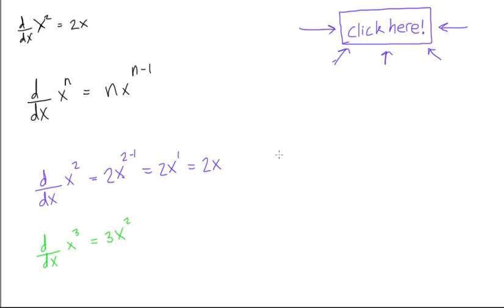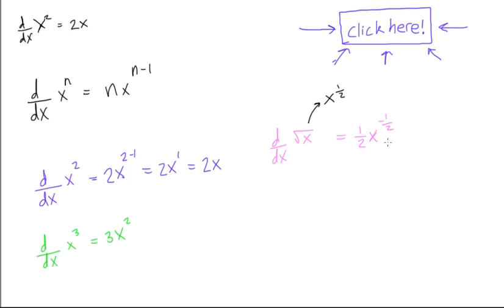Let's do some more. Say we want d/dx of the square root of x. Well, the square root of x is the same thing as x to the power of 1/2. So when we apply the power rule, we take the 1/2 and bring it in front: 1/2 times x to the power of 1/2 minus 1, which is to the power of minus 1/2. We can clean this up — this is also equal to 1 over 2 root x.